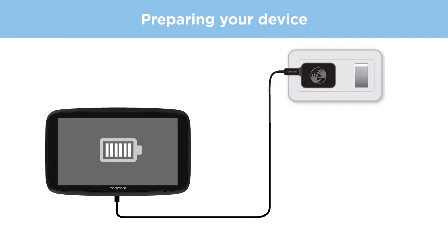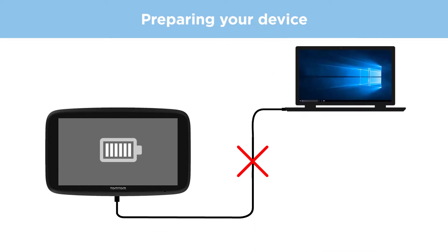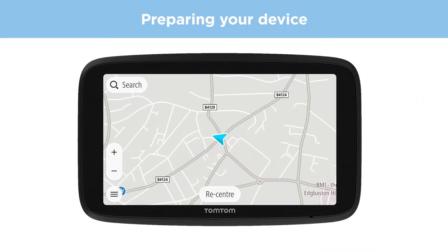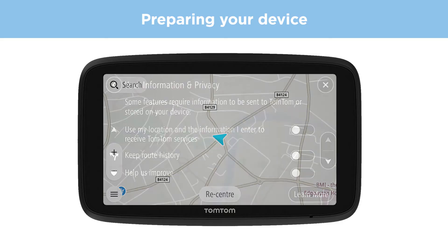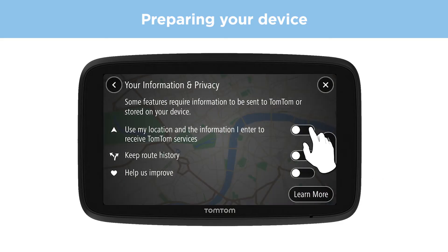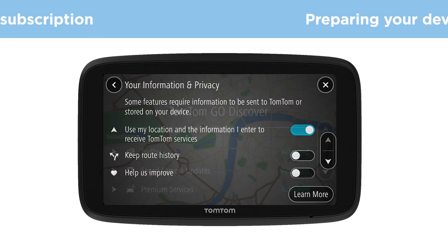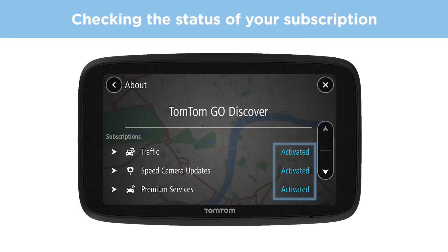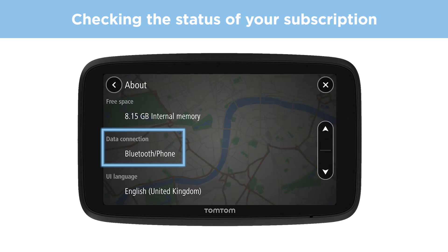Your device should be fully charged before testing your connection, but make sure that it's not connected to a computer. Check that you have a valid GPS signal — your device should show your current location and not be greyed out. Make sure that information sharing is enabled on your device. Check that your subscription service is listed as activated and that your device is connected.